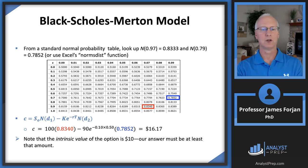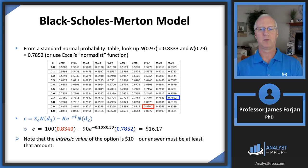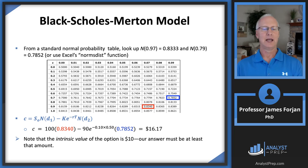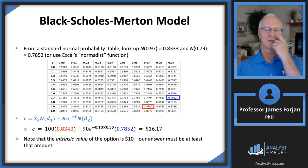Now we look those numbers up on the standard normal table. Running down to 0.9 and over to 0.07 for d1 ≈ 0.97, we get N(d1) = 0.834. For d2 ≈ 0.79, we get N(d2) = 0.7852. Notice the simple option pricing model is right there — it's just been probability-weighted. We weight the $100 stock price by 83.4% and the present value of the exercise price by 78.52%, giving a BSM call price of $16.17.